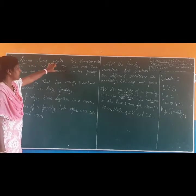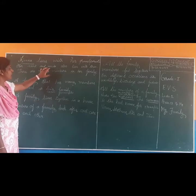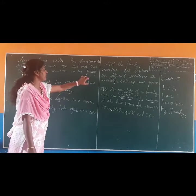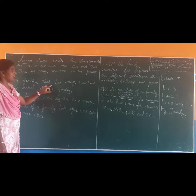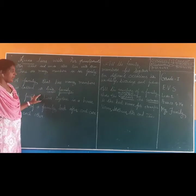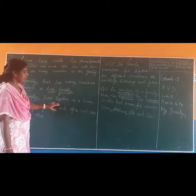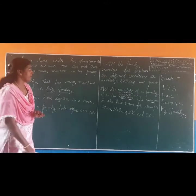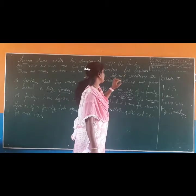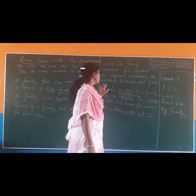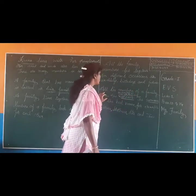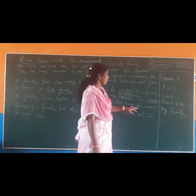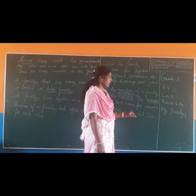Rina lives with her grandparents. Her aunt and uncle also live with them. There are many members in her family. A family that has many members is called a big family. A family lives together in a house. Members of a family look after and care for each other. All the family members get together on different occasions like weddings, birthdays, and festivals. All the members of a family share the surname. The surname is the last name. For example: Verma, Matthews, Ali, and Jane.